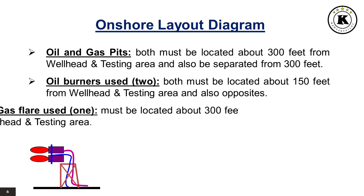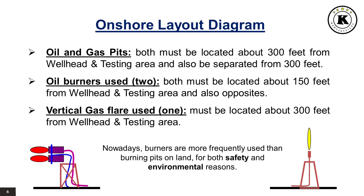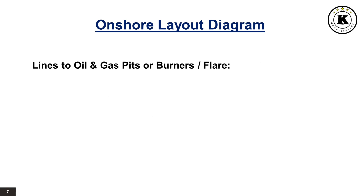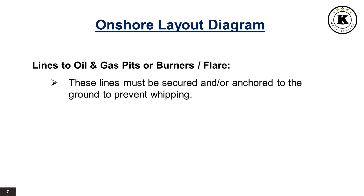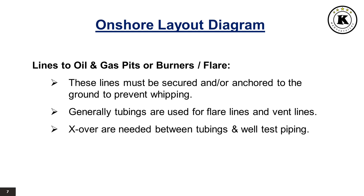The vertical gas flare, generally one, must be located about 300 feet from the wellhead and testing area. Nowadays, burners are more frequently used than burning pits on land, for both safety and environmental reasons. Lines to oil and gas pits, burners, or flare must be secured and anchored to the ground to prevent whipping. Generally, tubings are used for flare lines and vent lines, and crossovers are needed between tubings and well test piping.